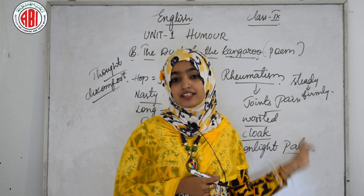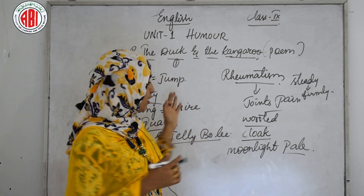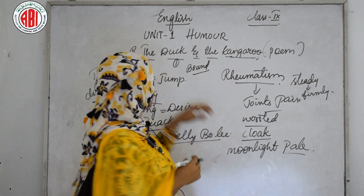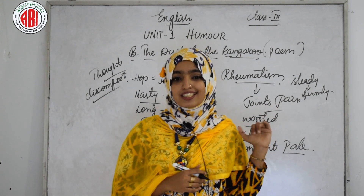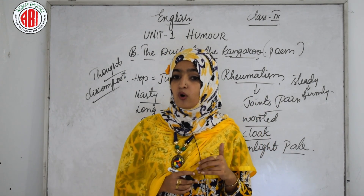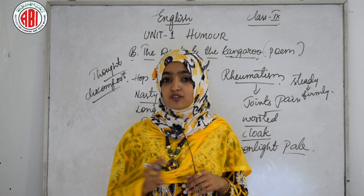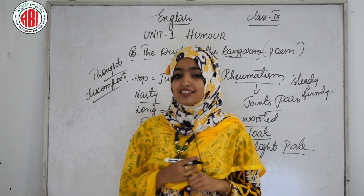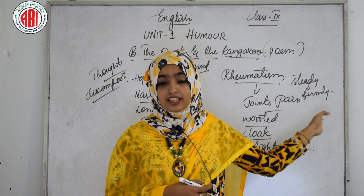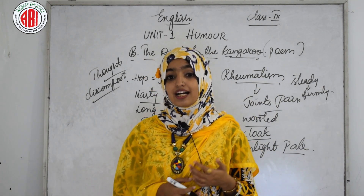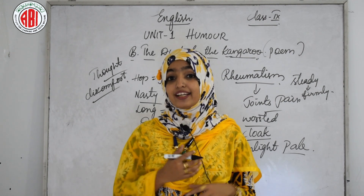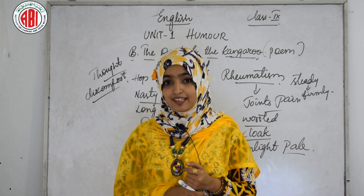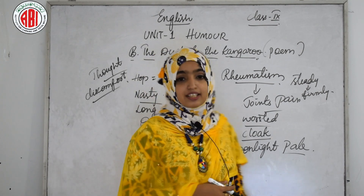'So away they went with a hop and a bound.' Bound means to run quickly with long steps. 'And they hopped the whole world three times round, and oh, so happy were the duck and the kangaroo!' After the duck balanced properly on the kangaroo's back, they went with a hop and a bound, traveled the whole world three times, and were very happy together.